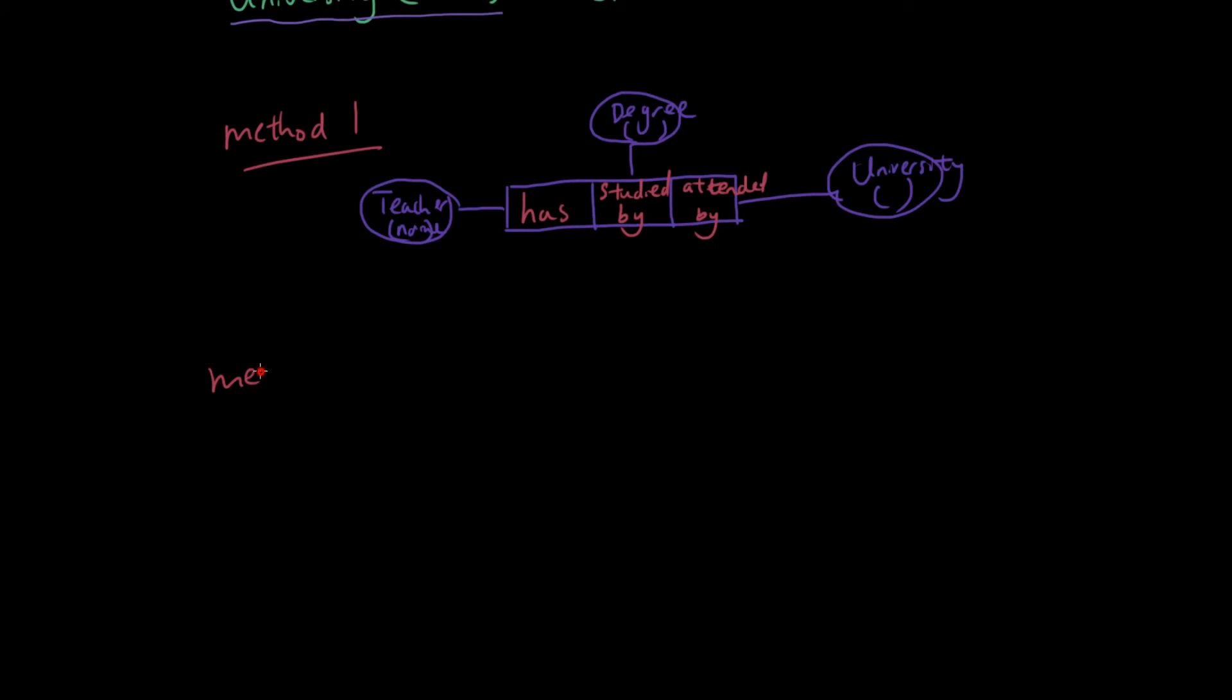Method two is by using a nested relationship. So I'm basically going to pretend that one of the entities doesn't exist. So I'm just going to say teacher has a degree.